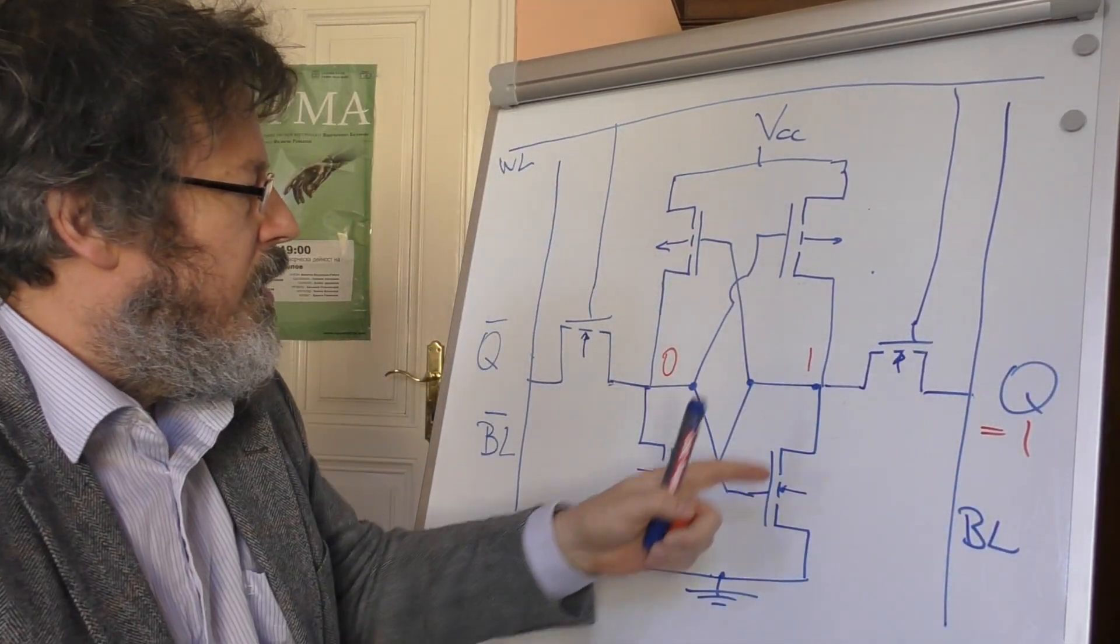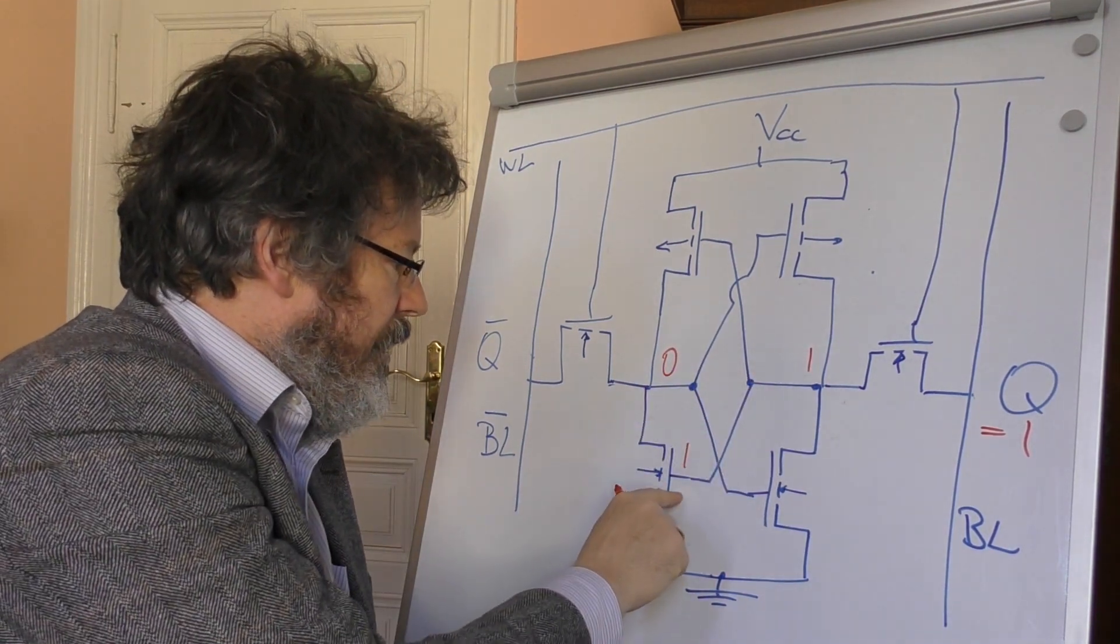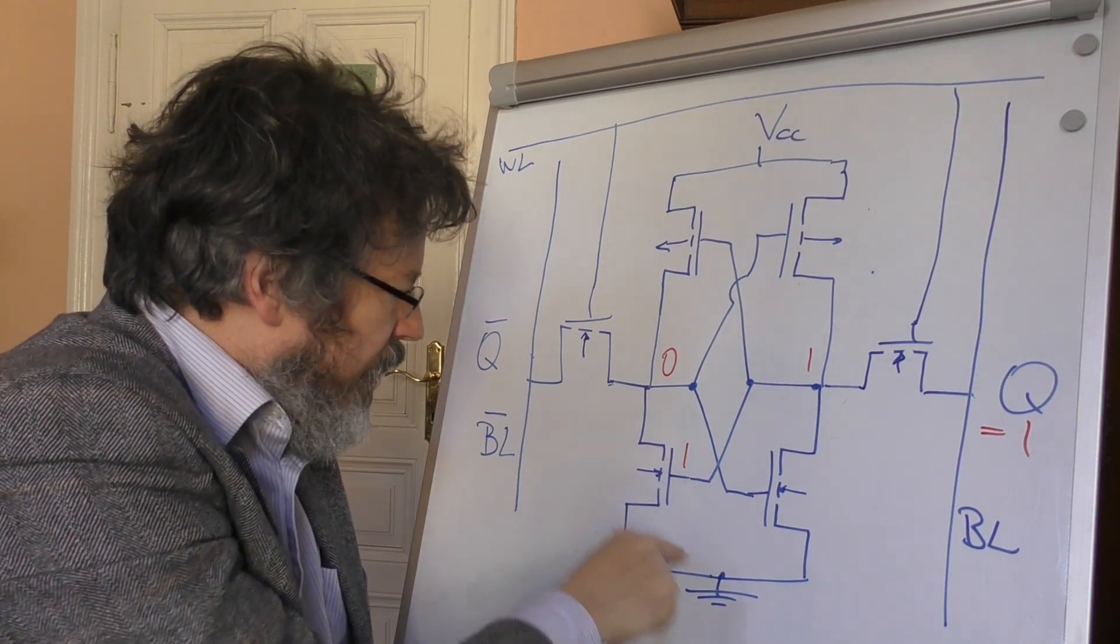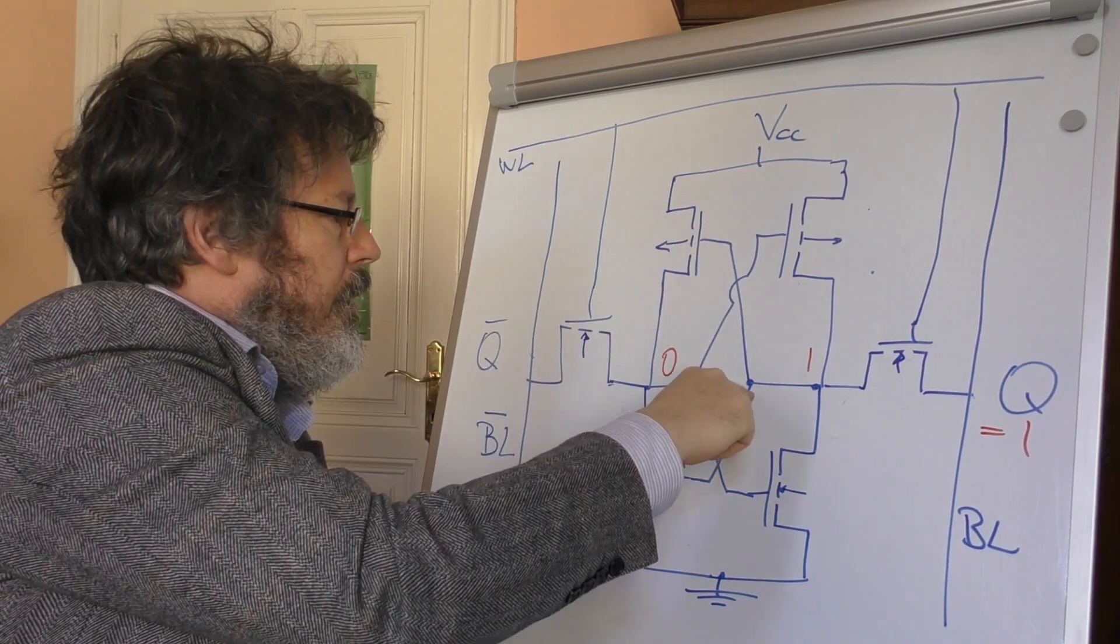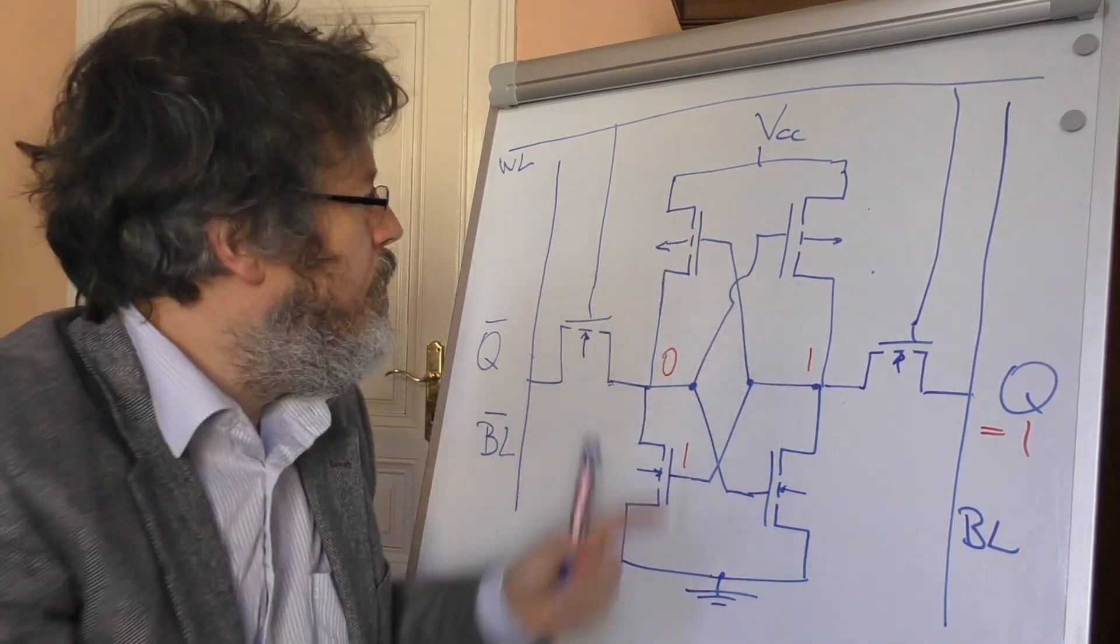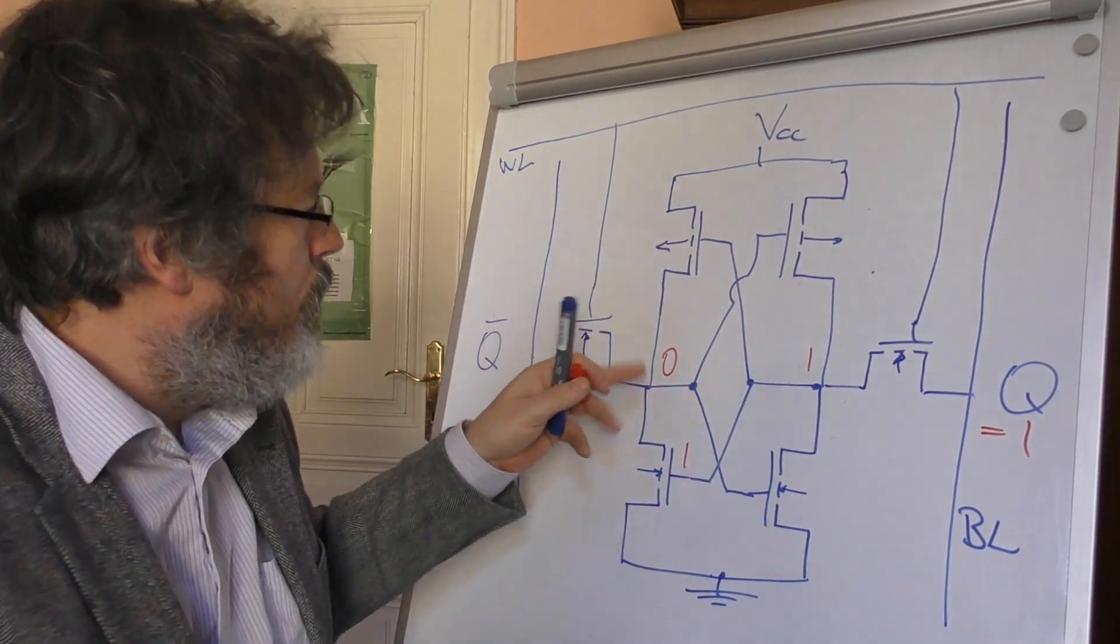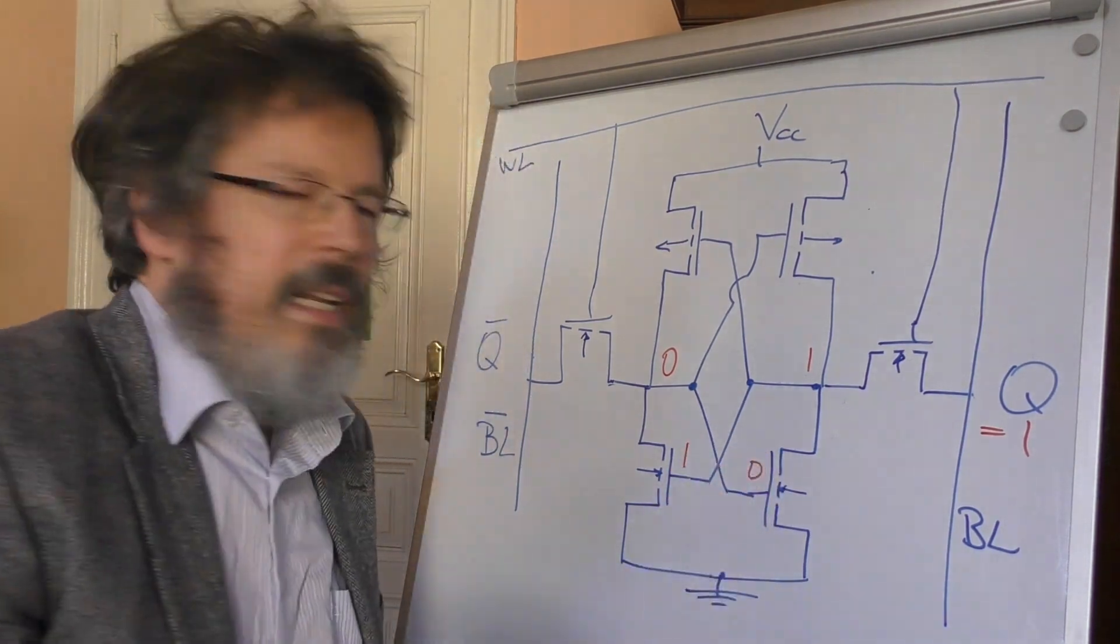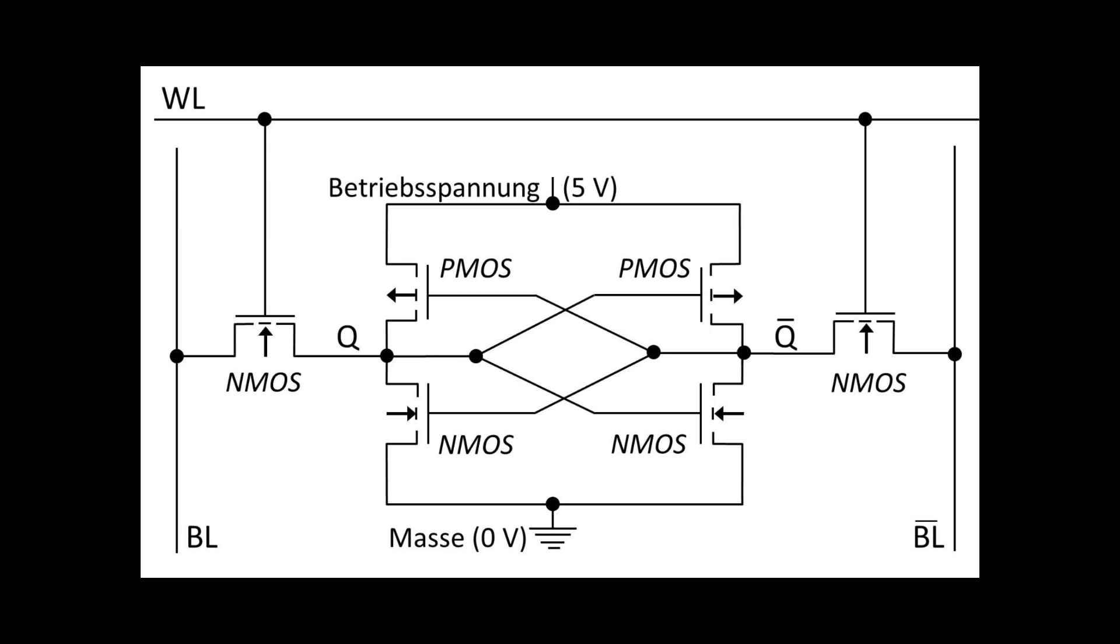And can also be read out here at the Q output. This 1 is then applied to this gate—not at this transistor here, but at this gate. That switches and conducts the 0 from down here. And at the same time, this 1 is also applied here and blocks the CMOS transistor up here. And when the whole thing eventually reverses, when zeros and ones are swapped, it reverses accordingly.